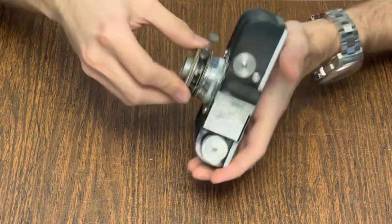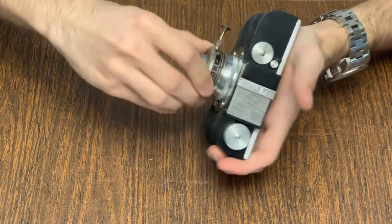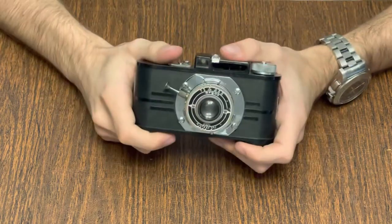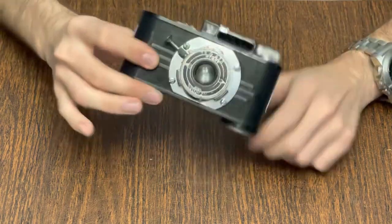Once this is done, you can collapse the lens again by twisting and placing back, doing the reverse of taking it out, and then you're ready to put it in your pocket and take another photo.